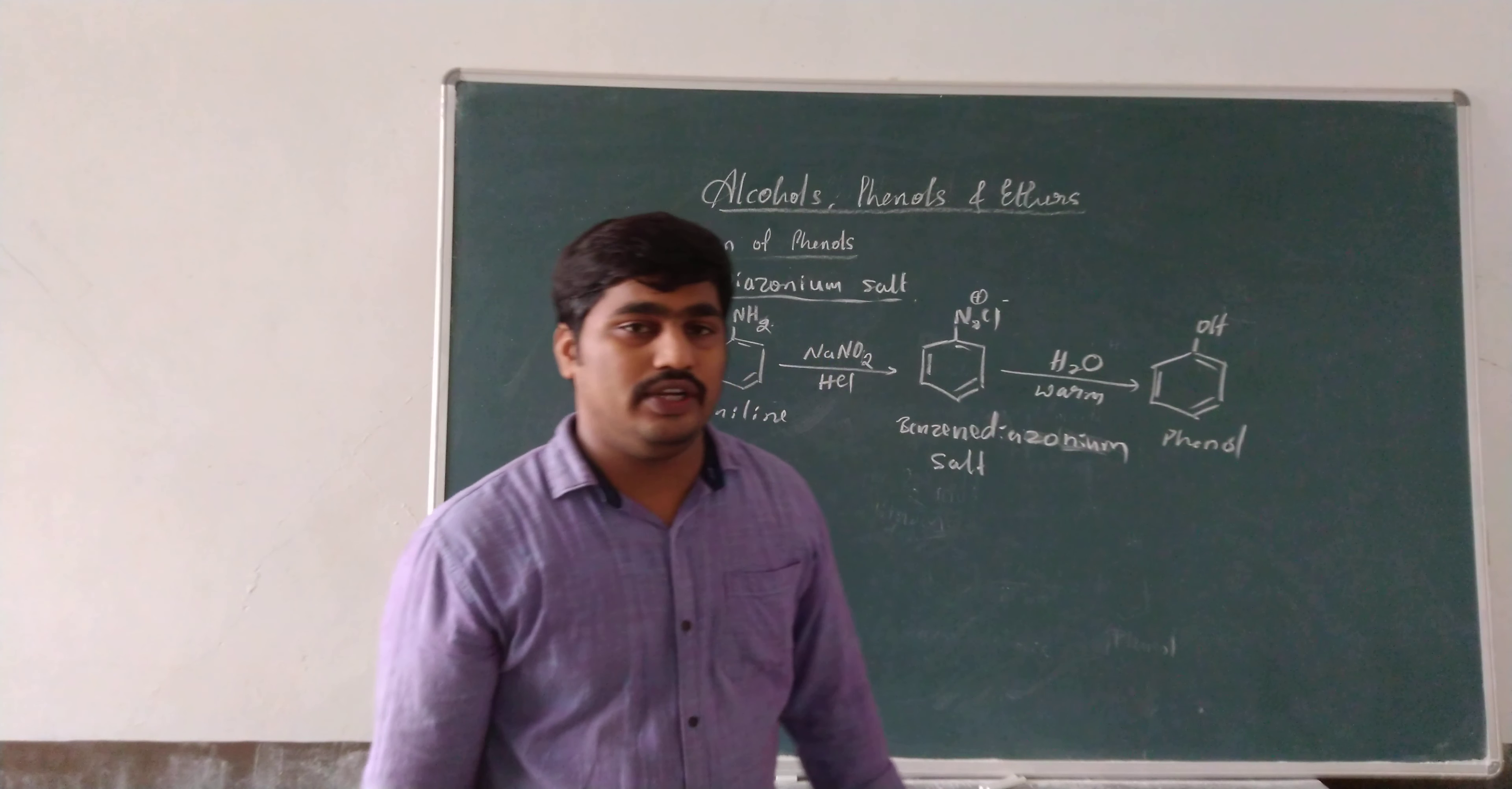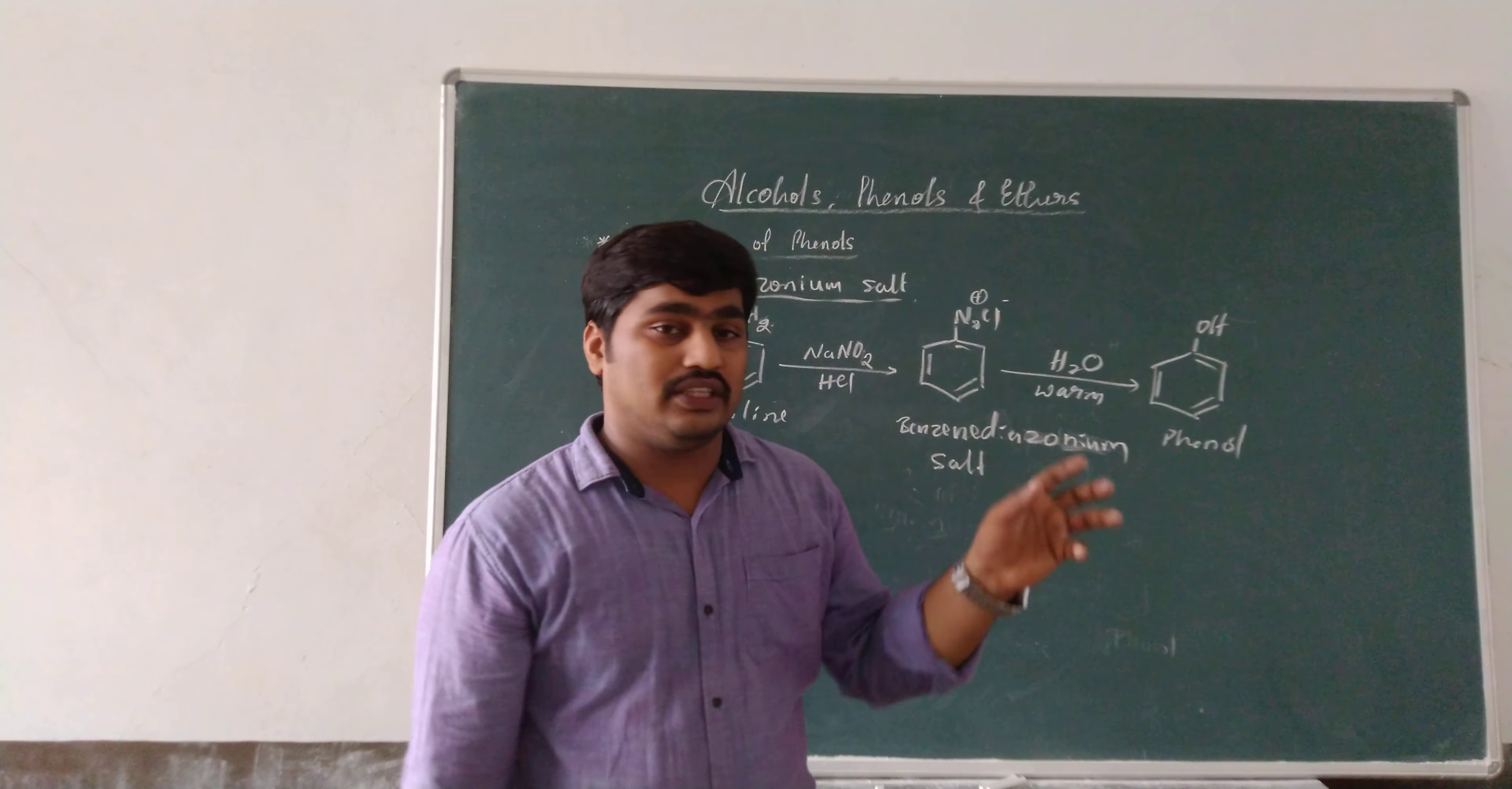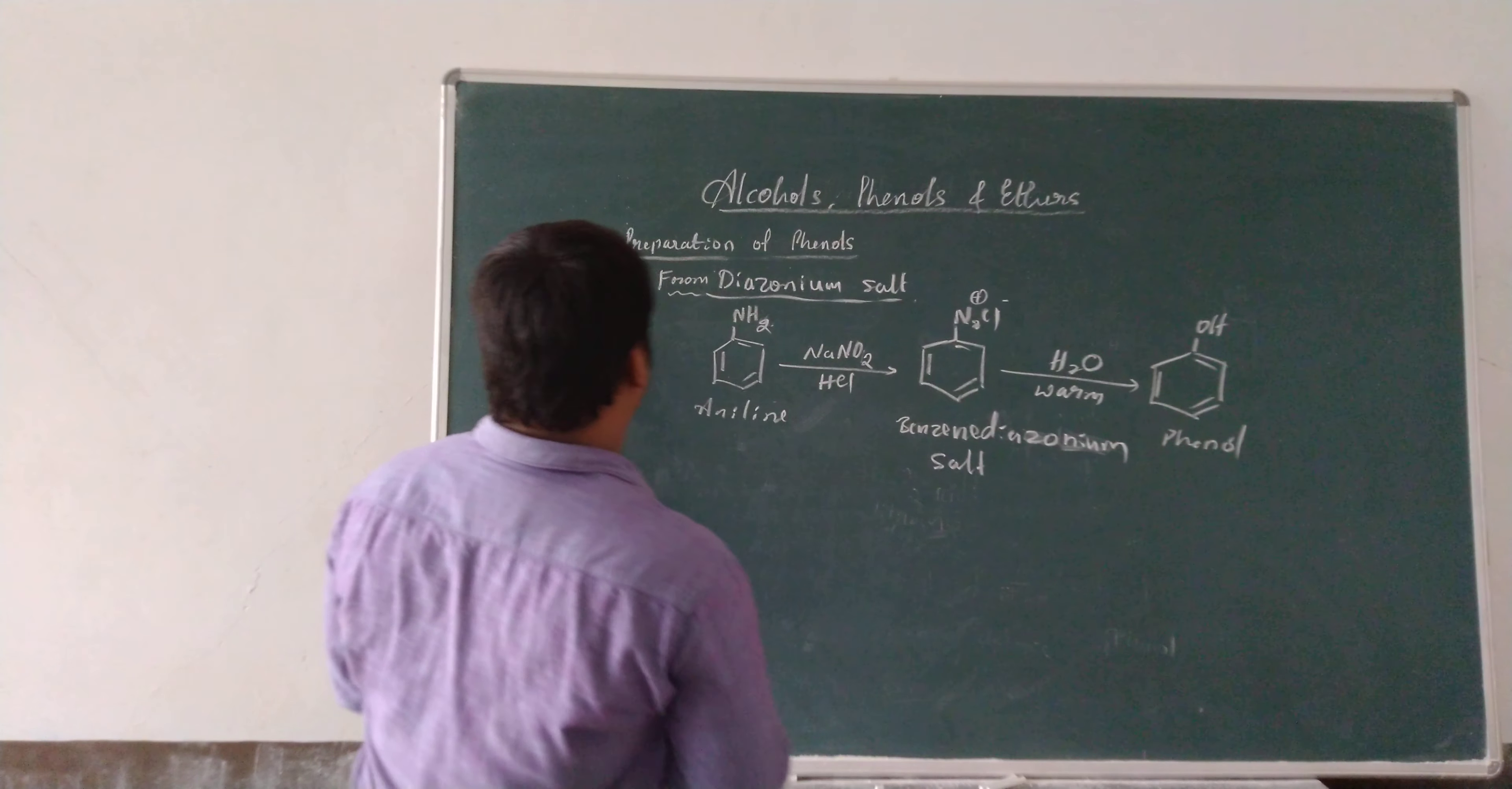this diazonium salt is made to react with different reagents, reactants like cuprous chloride in presence of HCl, cuprous bromide in presence of HBr. Then it produces different haloaryls. This haloarene is produced and this method, the preparation of haloarenes from benzene diazonium salt is nothing but very important. Sandmeyer's reaction. Just hydrolysis of diazonium salt is phenol. These three are not much important.